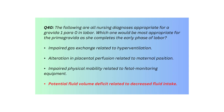Q40. The following are all nursing diagnoses appropriate for a gravida 1 para 0 in labor. Which one would be most appropriate for the primigravida as she completes the early phase of labor? Impaired gas exchange related to hyperventilation, alteration in placental perfusion related to maternal position, impaired physical mobility related to fetal monitoring equipment, or potential fluid volume deficit related to decreased fluid intake.